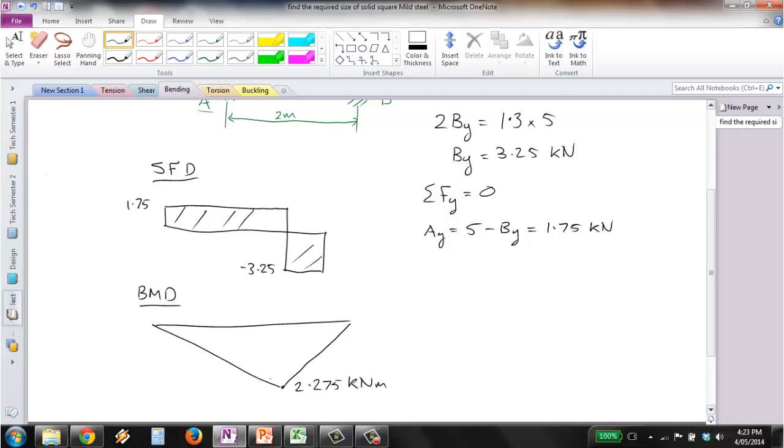Now we've got the bending moment, we can determine what size of square section we need. We can use stress equals my over I. Because we've got two unknowns here, y and I, we create a new variable called z, which is equal to I over y, and solve for z.